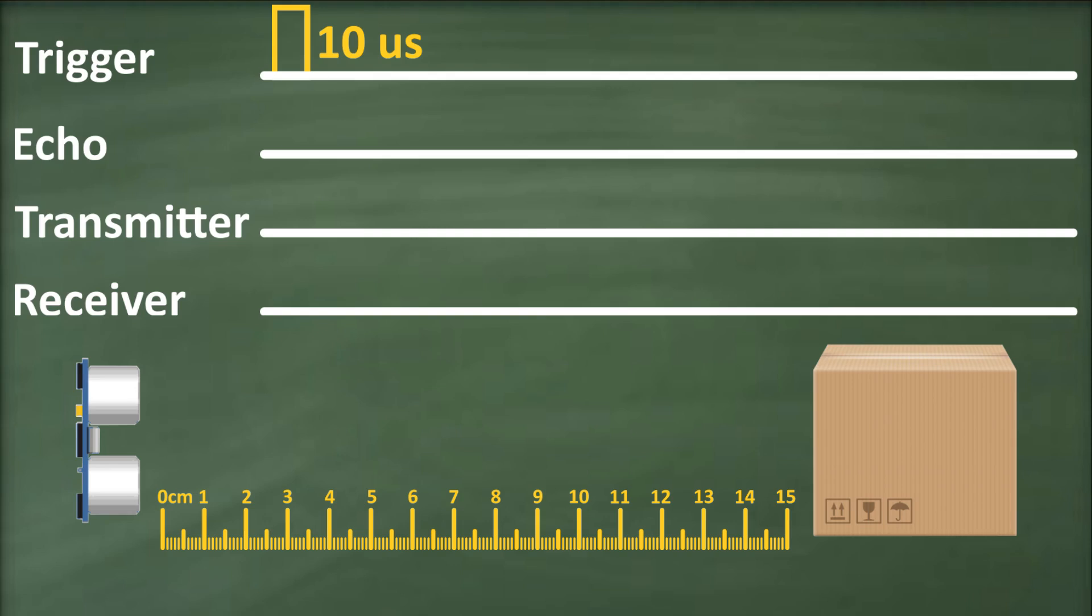When the module receives the trigger pulse, it transmits an ultrasonic burst of 8 pulses at 40 kilohertz. This 8-pulse pattern is designed to distinguish the transmitted pulses from ambient ultrasonic noise. These pulses travel through the air away from the transmitter, while the echo pin goes high to initiate the echo back signal.